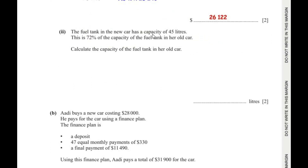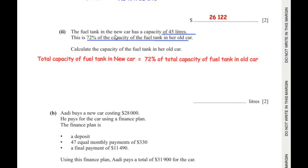Moving on to the next question. The fuel tank in the new car has a capacity of 45 liters. This is 72% of the capacity of the fuel tank in her old car. Calculate the capacity of the fuel tank in her old car. The total capacity of the fuel tank in the new car is 72% of the total capacity of the fuel tank in the old car.